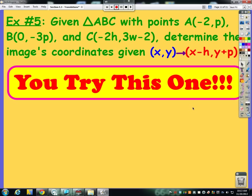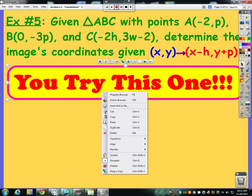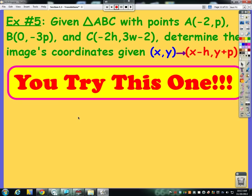So the last example, I want you to try this one. And yes, this one is more algebraic. I have a mixture of constants, like negative two, and variables, like p. So I want you to use this rule with these three points to tell me where the image coordinates will be for triangle ABC. And that is all for the first video on translations. And we will see you for the next video in which you will need a compass and protractor. So we'll see you next video.